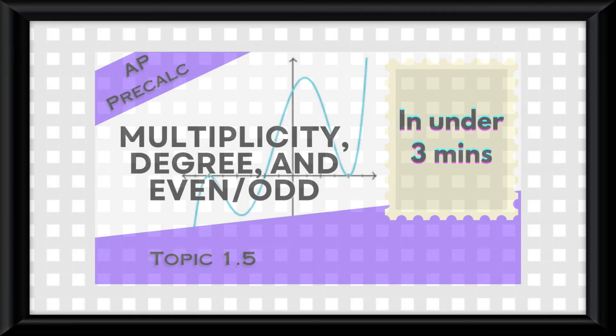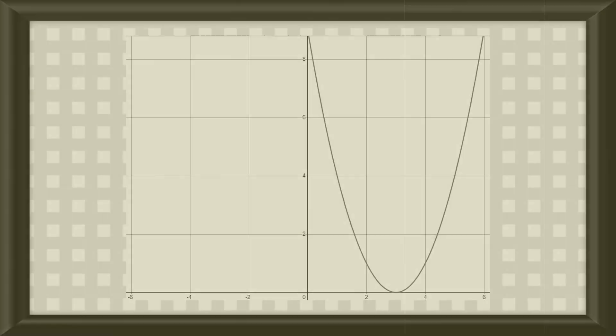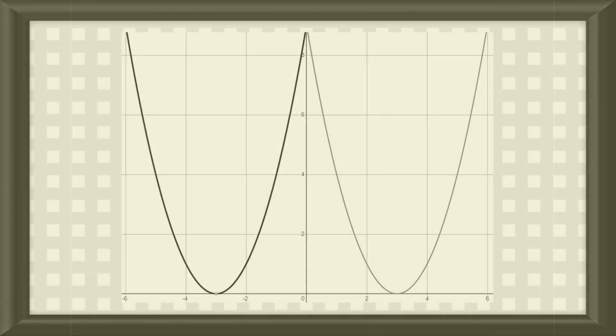Okay, one more thing to talk about. And to understand it, let's go back to my Unit 1 Topic 5 video where I sounded truly dead inside. A function is even if it satisfies the property f of negative x equals f of x, or if reflected across the y-axis, the graph looks the exact same.